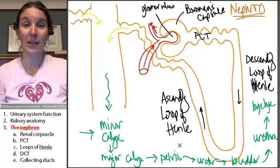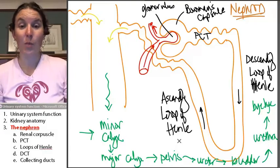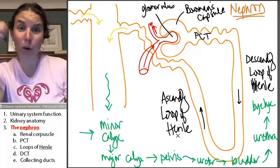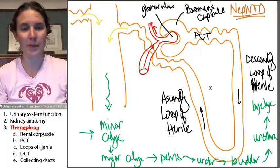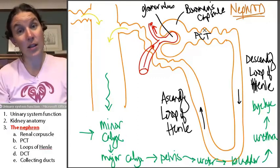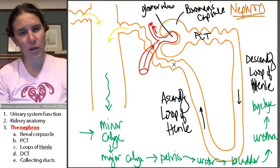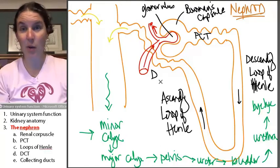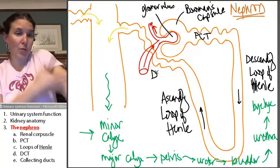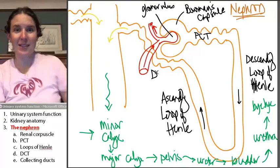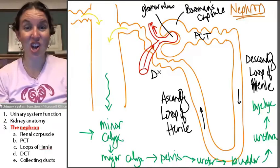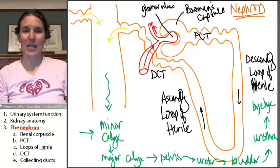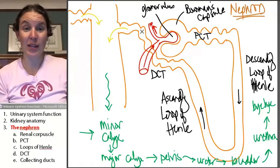The ascending loop of Henle. I went to Henley High School and we were the Henley Hornets. Go Hornets. That's how I remember it. Now, this was the proximal convoluted tubule. What would you call this one? Totally looks similar, doesn't it? Not proximal. It's distal convoluted tubule. And that's the squiggly one at the end.